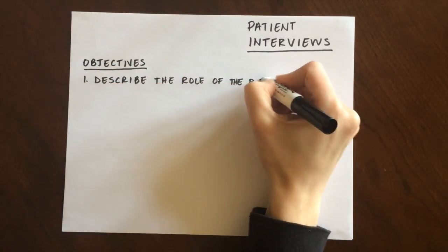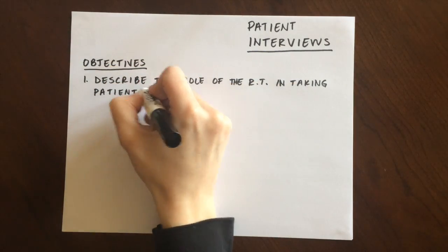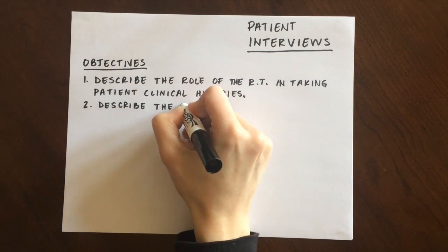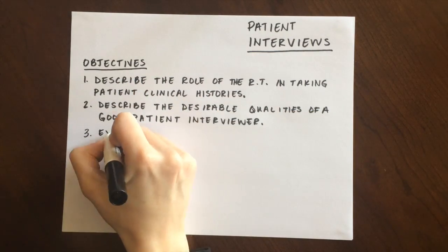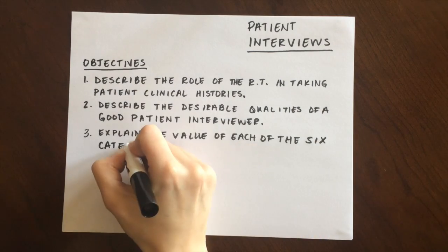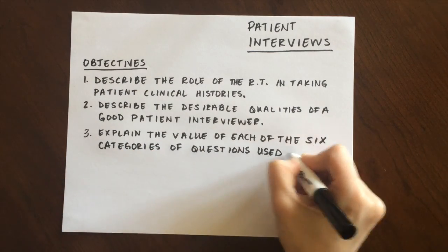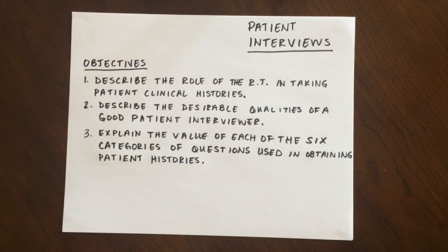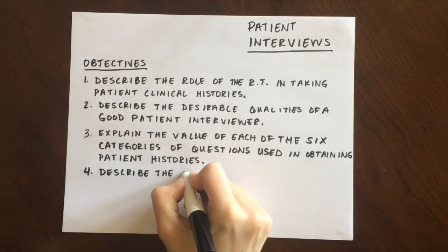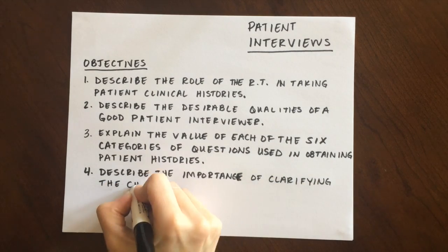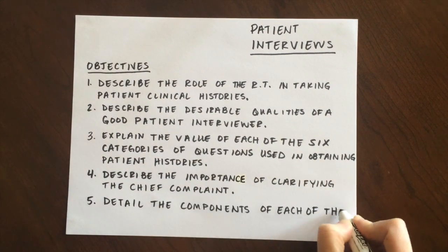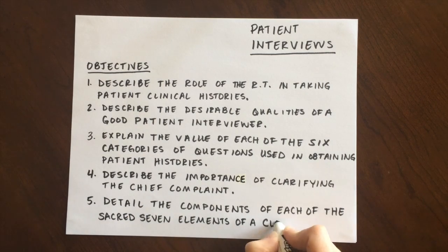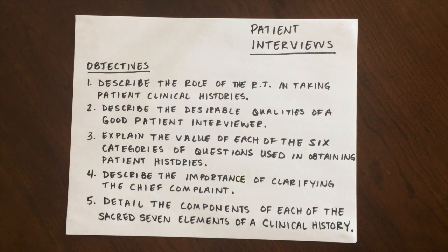When you finish this video, you should be able to describe the role of the RT in taking patient clinical histories, describe the desirable qualities of a good patient interviewer, explain the value of each of the six categories of questions used in obtaining patient histories, describe the importance of clarifying the chief complaint, and detail the components of each of the sacred seven elements of a clinical history.